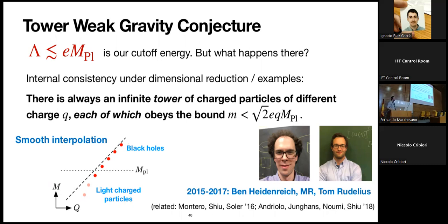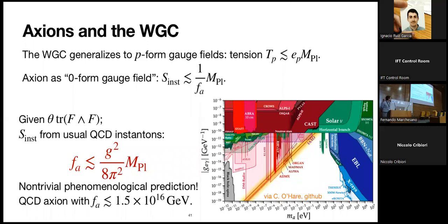We have a lot of evidence for this from string theory and from qualitative arguments. I want to talk about connecting all of this with axions. Axions are very well-motivated objects: they solve the strong CP problem and they seem to be banishing some sort of generalized unwanted global symmetry in our theory. There's a generalization of the WGC to p-form gauge fields, which in general says there's some charged object with a p-dimensional worldvolume whose tension should be smaller than the generalized coupling of the p-form gauge field times the Planck scale.